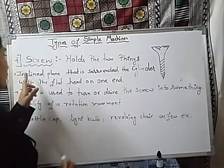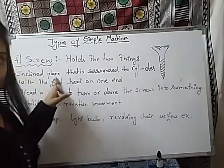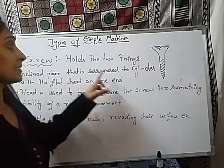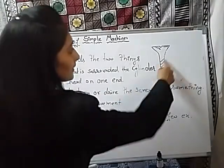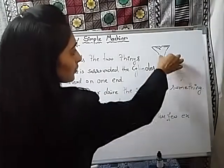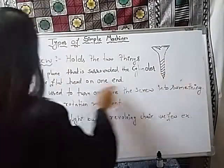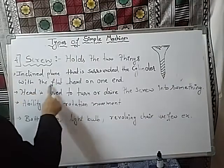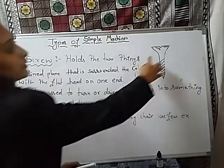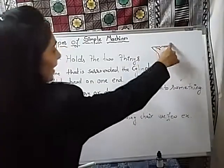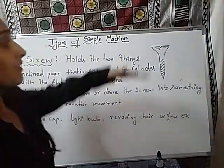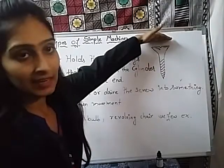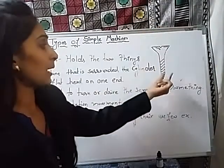A screw is basically an inclined plane that surrounds a cylinder. These are the inclined planes which surround the cylinder, with a flat head at one end and tapering at the other end.